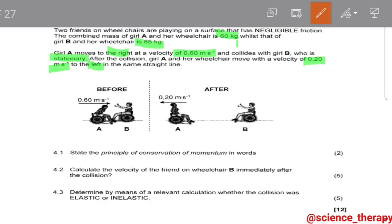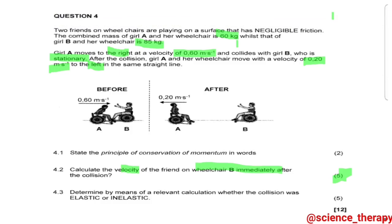Question 4.2 says: calculate the velocity of the friend on wheelchair B immediately after the collision. So we are looking for the final velocity of Girl B. From the marks here you can tell this requires the law of conservation of momentum — and 4.1 even gave us a hint by making us state that principle. Whenever you see five marks and you're asked to calculate a velocity or mass, just know you're using the law of conservation of momentum.